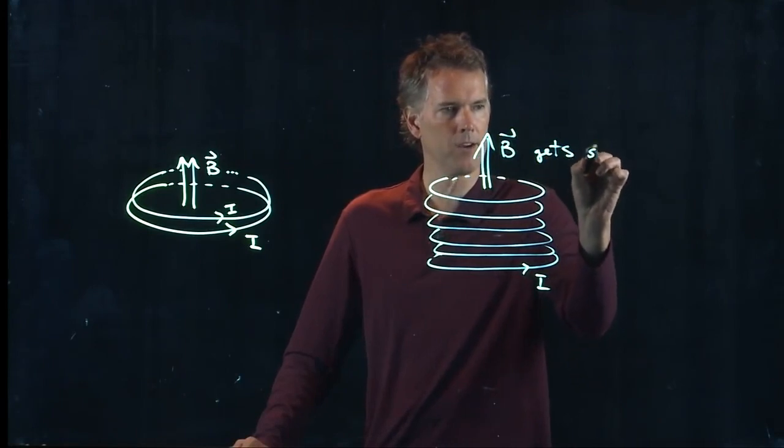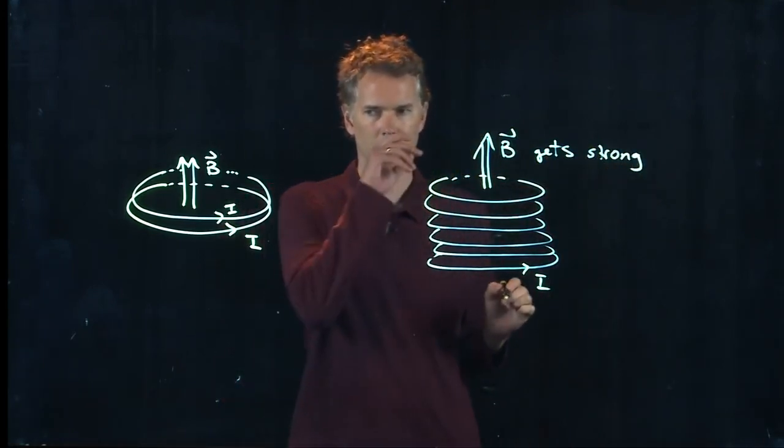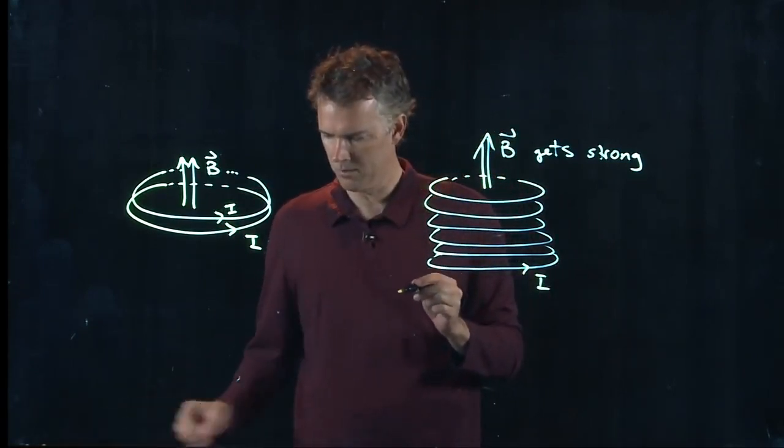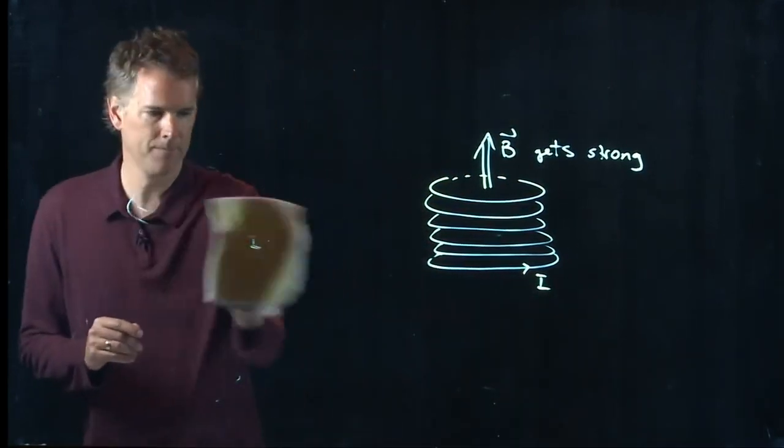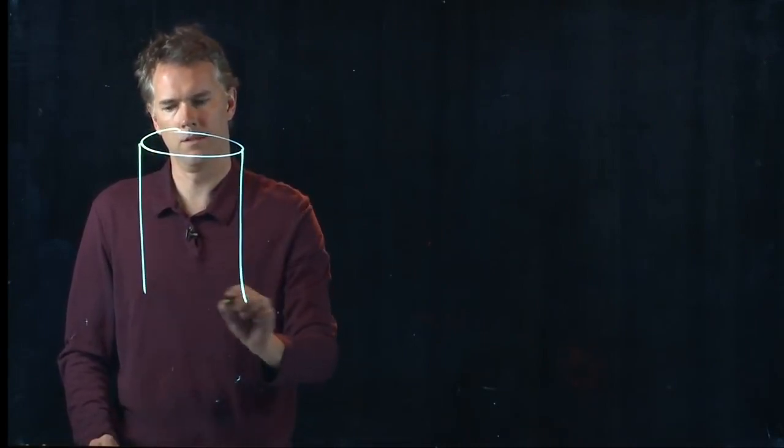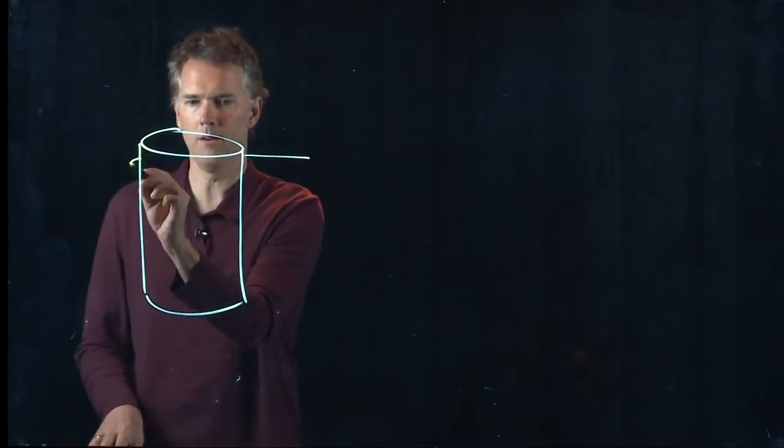This B field gets very strong, so this is of course a special device. And let me see if I can draw it slightly differently - a tube. And now you take a wire and you wrap that wire around the tube.